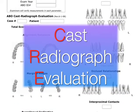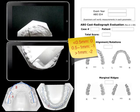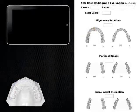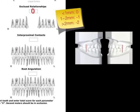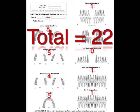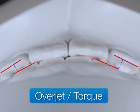We used the CRE to evaluate our treatment result. For alignment, there were five-point deductions, and another five-point deductions on overjet. The occlusal relationship is Class I so there is zero deduction. In total we deducted 22 points. The major discrepancy resulted from the flared upper lateral incisors.